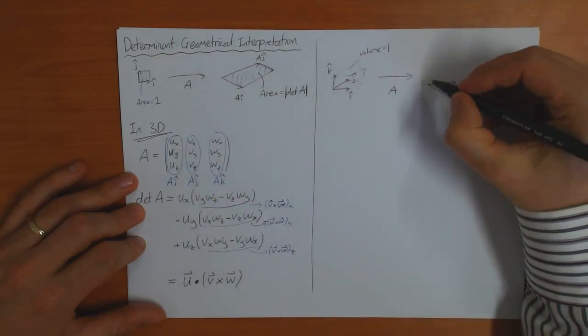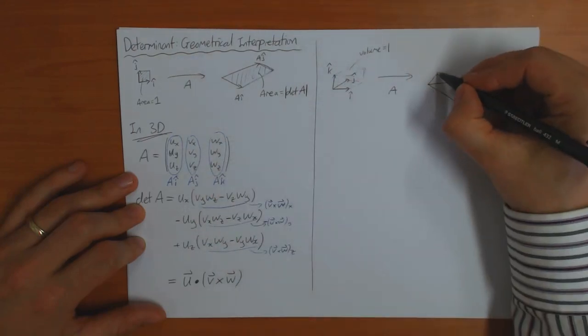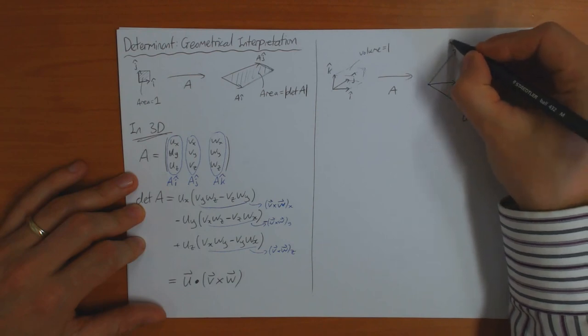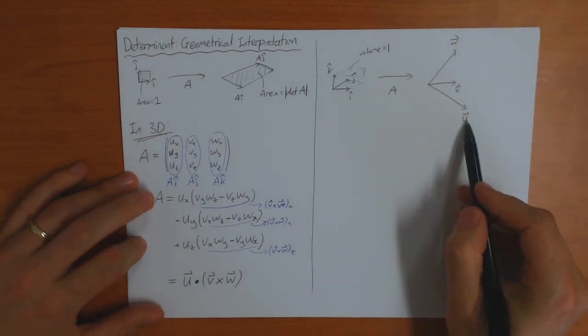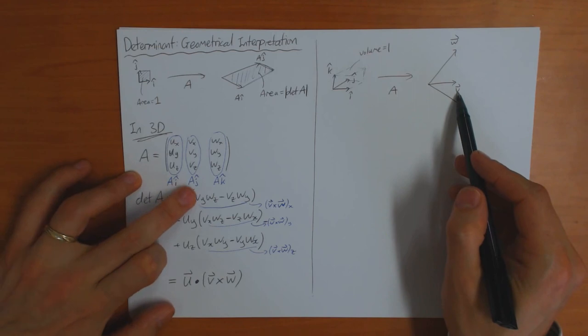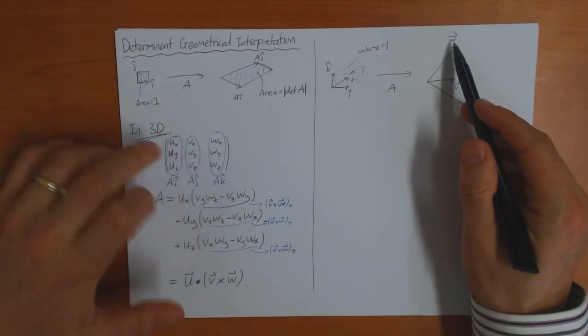And the vector K is mapped into the vector W. So U is A of I, V is A of J, W is A of K, like this.